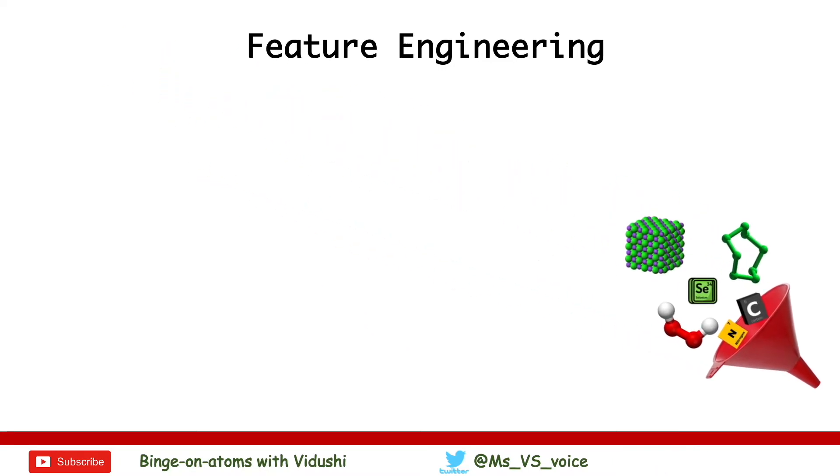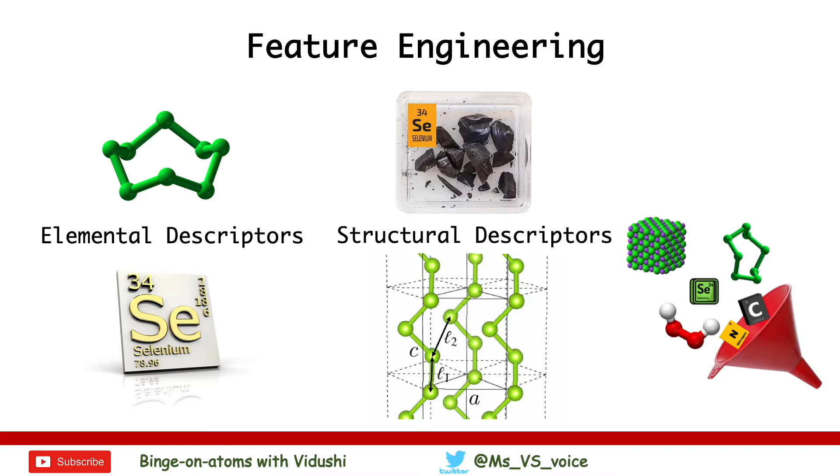For molecular problems, materials can be represented to neural networks in two formats: elemental or structural. Elemental descriptors use the intrinsic properties of elements like atomic numbers, atomization energy, electronegativity,